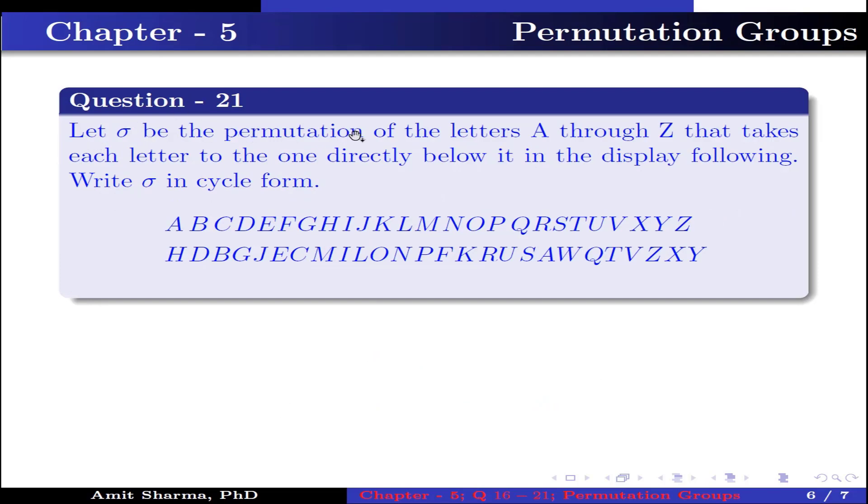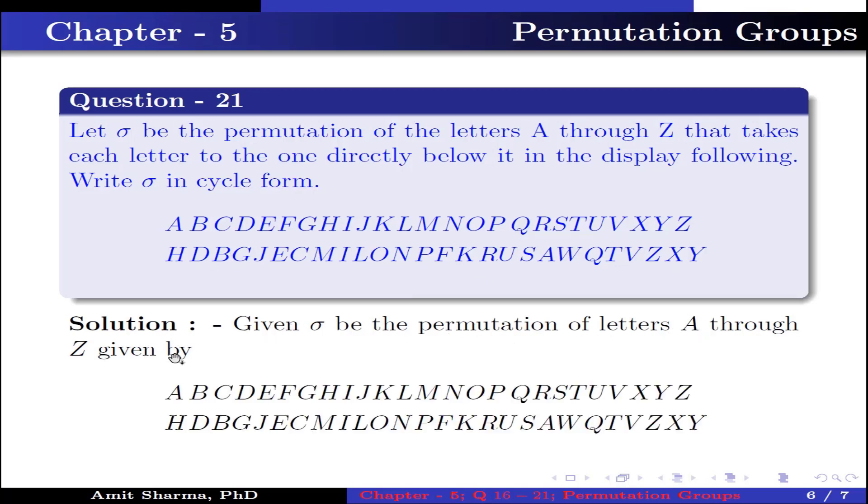Question number 21. Let σ be the permutation of letters A through Z that takes each letter to one directly below it in the display. Write σ in cyclic form where A, B, C, ..., Z are letters whose images are H, D, B, and so on.